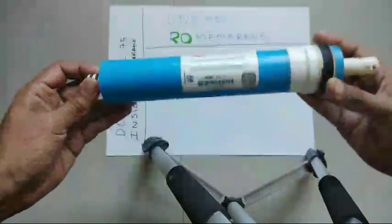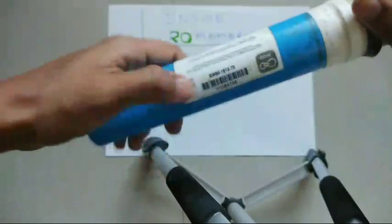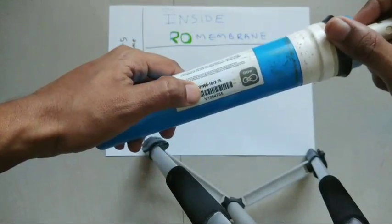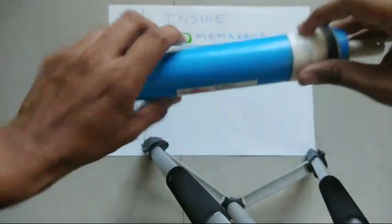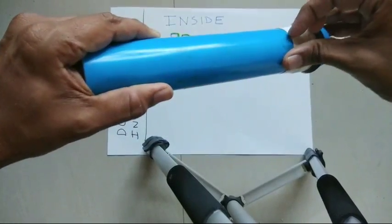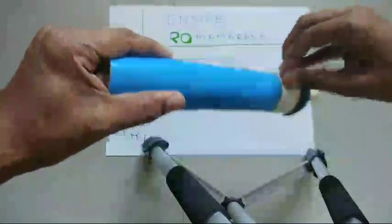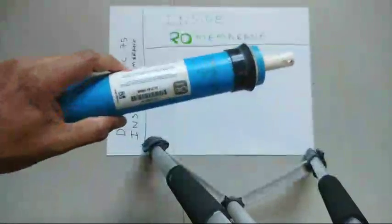Let's start with opening it. This is a brackish water 1812 75 GPD membrane manufactured by Dow Chemtech. Let's open this membrane and see what's inside.